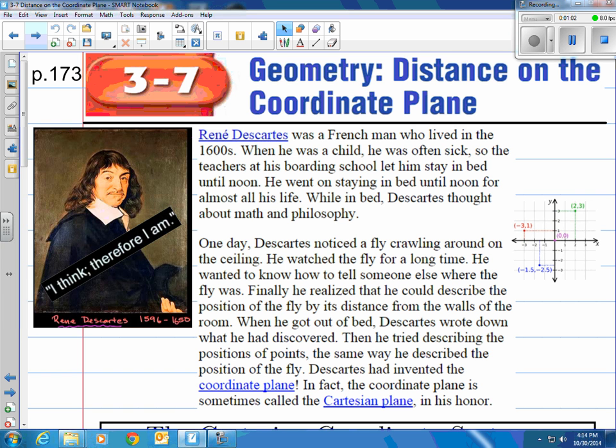One day Descartes noticed a fly crawling around on the ceiling. He watched the fly for a long time. He wanted to know how to tell someone else where the fly was. Finally he realized that he could describe the position of the fly by its distance from the walls of the room. When he got out of bed Descartes wrote down what he had discovered. Then he tried describing the positions of points the same way he described the position of the fly. Descartes had invented the coordinate plane. In fact the coordinate plane is sometimes called the Cartesian plane or Cartesian coordinate system in his honor. And you can see him over there on the left and he's also credited with stating I think therefore I am.